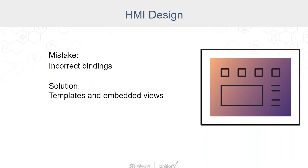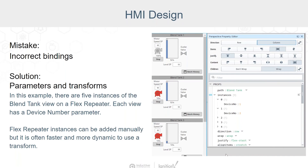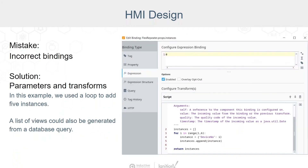If you find yourself tempted to copy and paste a group of components, consider creating a reusable view or template. One thing to avoid when embedding views is deeply nesting — stick to only a few levels. You also need to know when to use parameters and transforms instead of bindings to further increase functionality. In this example, there are five instances of the blend tank view on a flex repeater, each with a device number parameter. Using a transform linked to a source such as a query will allow your content to be dynamic. A list of views could be generated from a database query containing equipment information, so if new equipment is added, it would appear on the screen automatically.